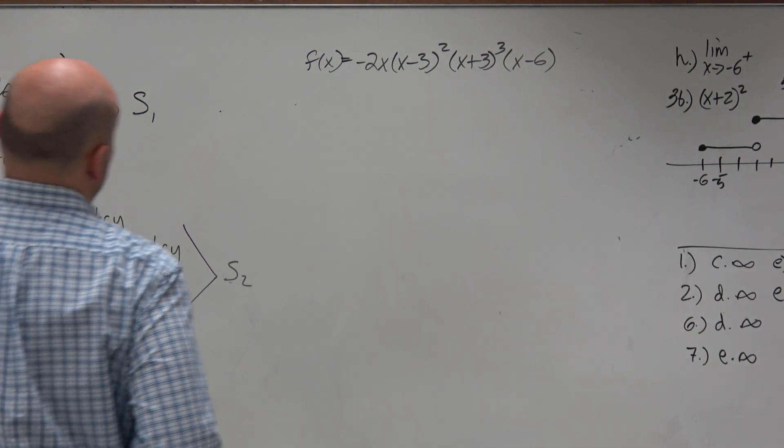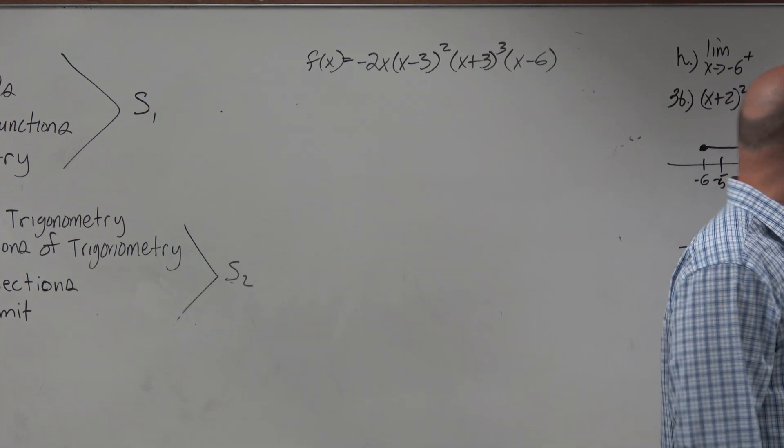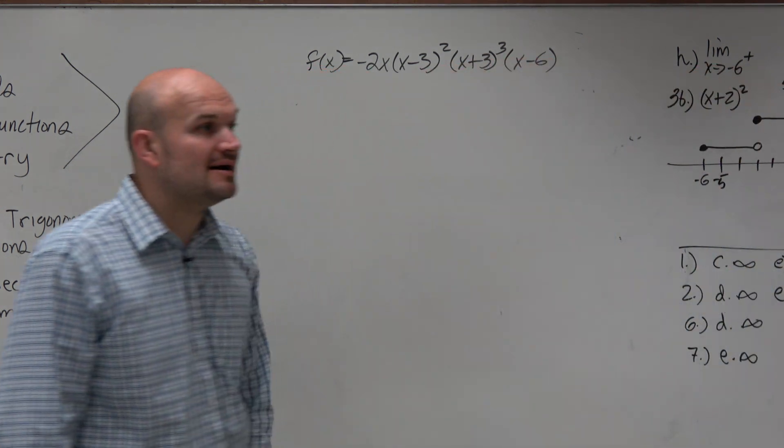Let's take a look at this function. We have f(x) equals negative 2x times x minus 3 squared times x plus 3 cubed times x minus 6.